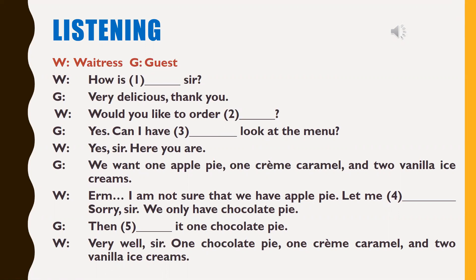Conversation two. How is everything, sir? Very delicious, thank you. Would you like to order dessert? Yes, can I have another look at the menu? Yes, sir, here you are. We want one apple pie, one creme caramel, and two vanilla ice creams. I'm not sure that we have apple pie, let me check. Sorry, sir, we only have chocolate pie. Then make it one chocolate pie. Very well, sir — one chocolate pie, one creme caramel, and two vanilla ice creams.